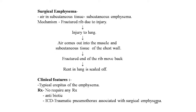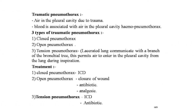Traumatic pneumothorax: air in the pleural cavity is called pneumothorax; when due to trauma, it is called traumatic pneumothorax. In the majority of trauma cases, blood is also associated with air in the pleural cavity — this is called hemopneumothorax. There are three types: closed pneumothorax — air comes into the pleural cavity through a small rent in the lung from rib fracture ends, and the rent subsequently closes; open pneumothorax — air enters the pleural cavity through a wound in the chest wall.